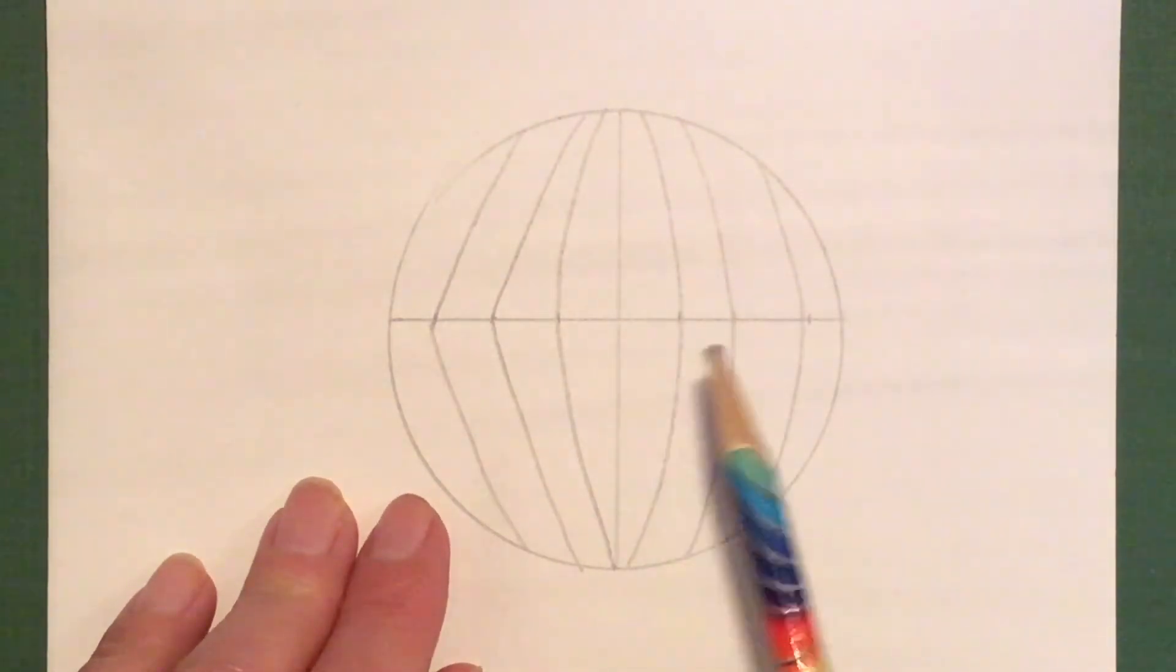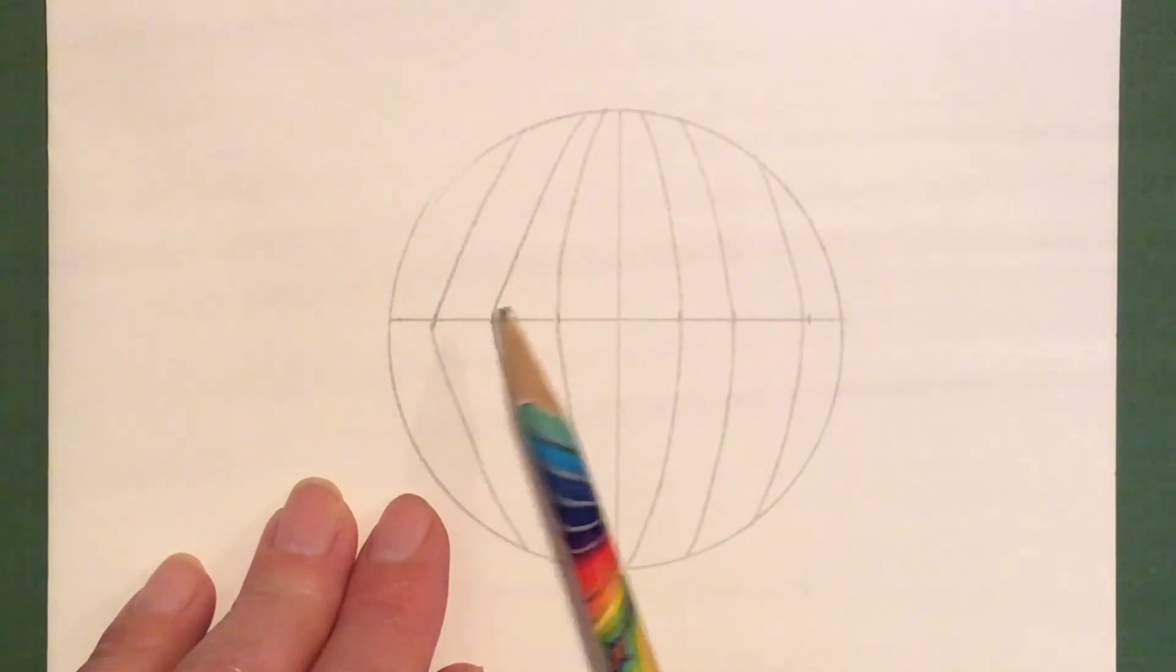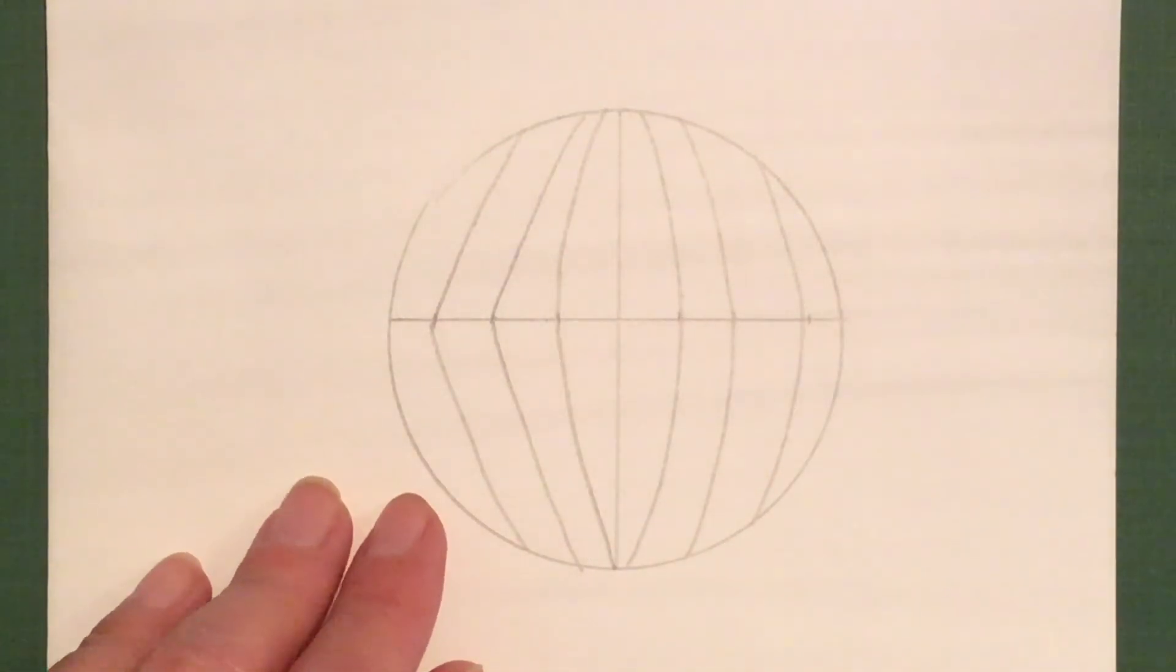See the difference between this side and this side. This side has these points. This side has a smooth arc.